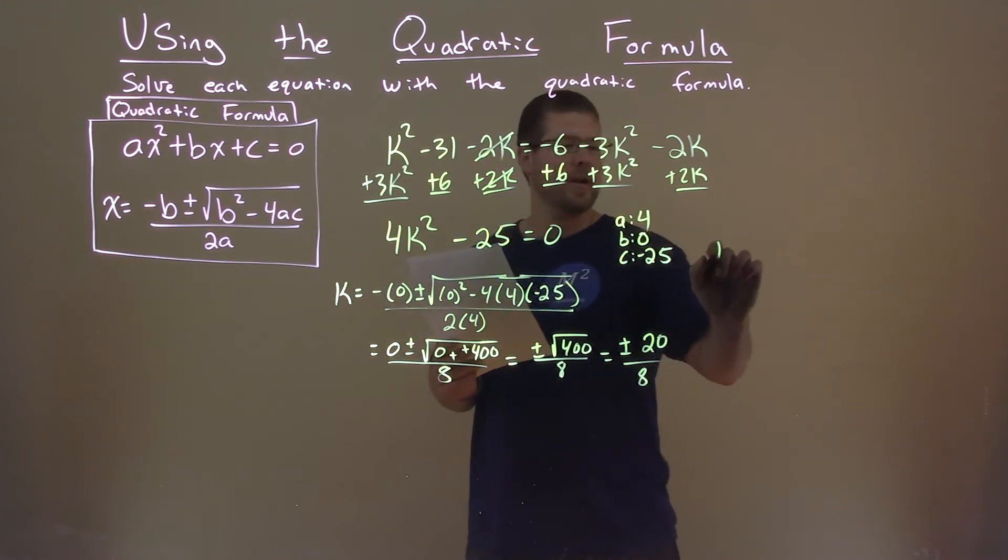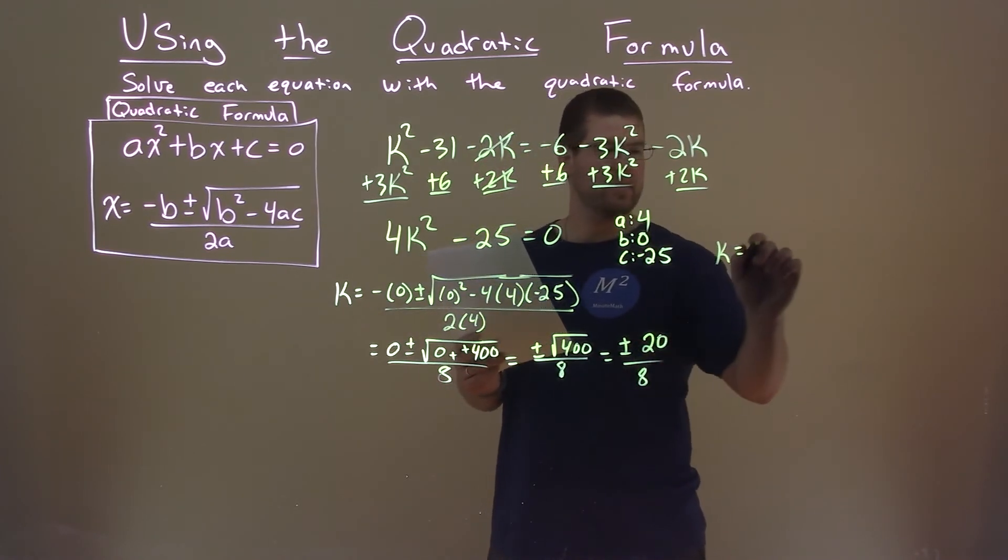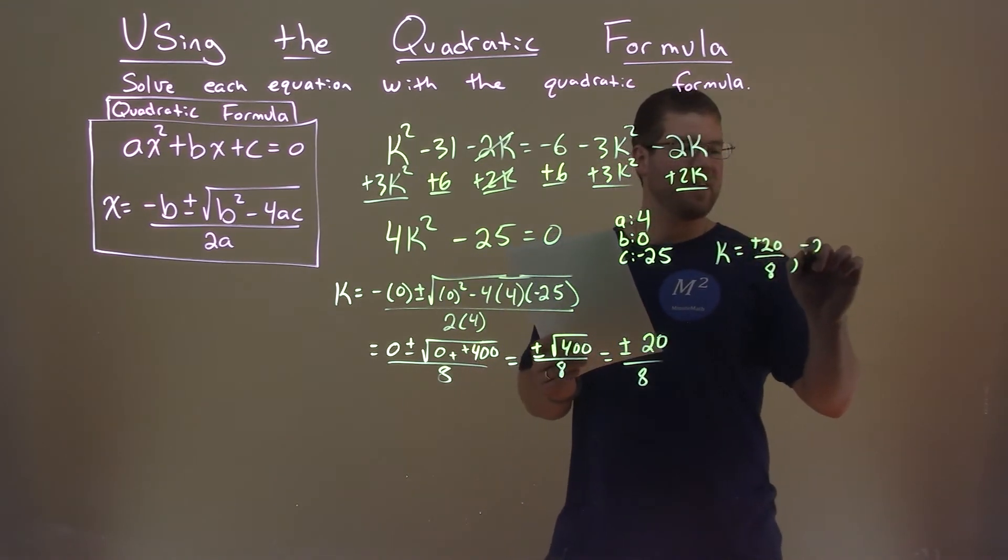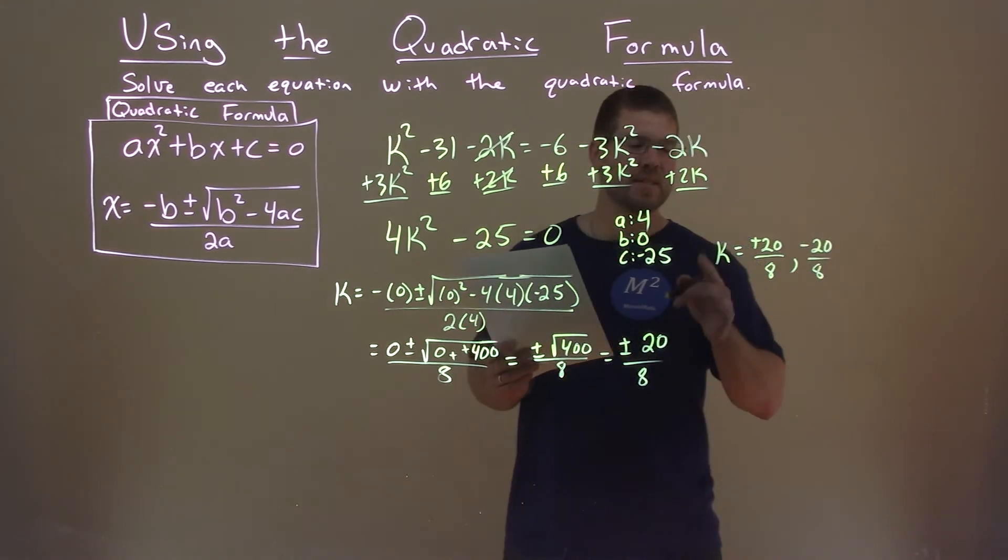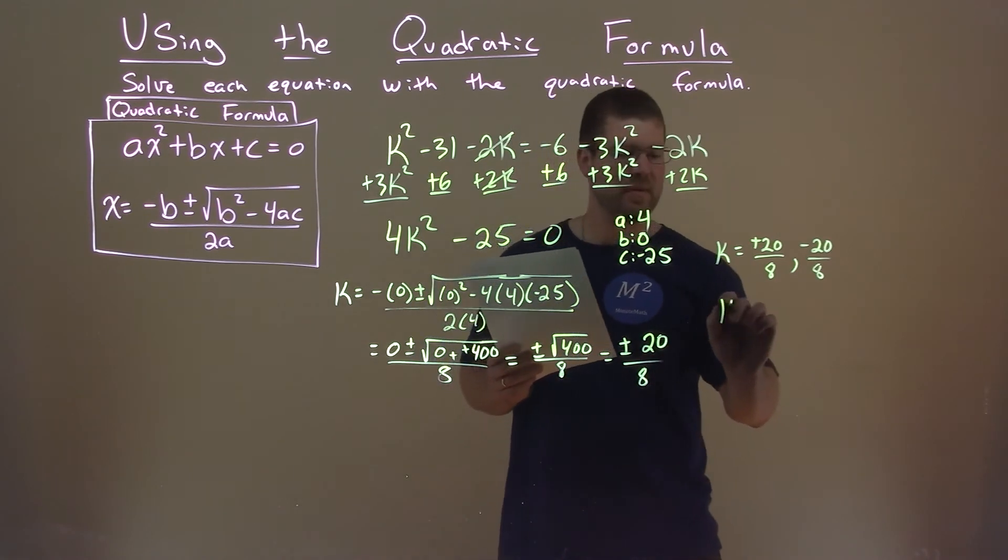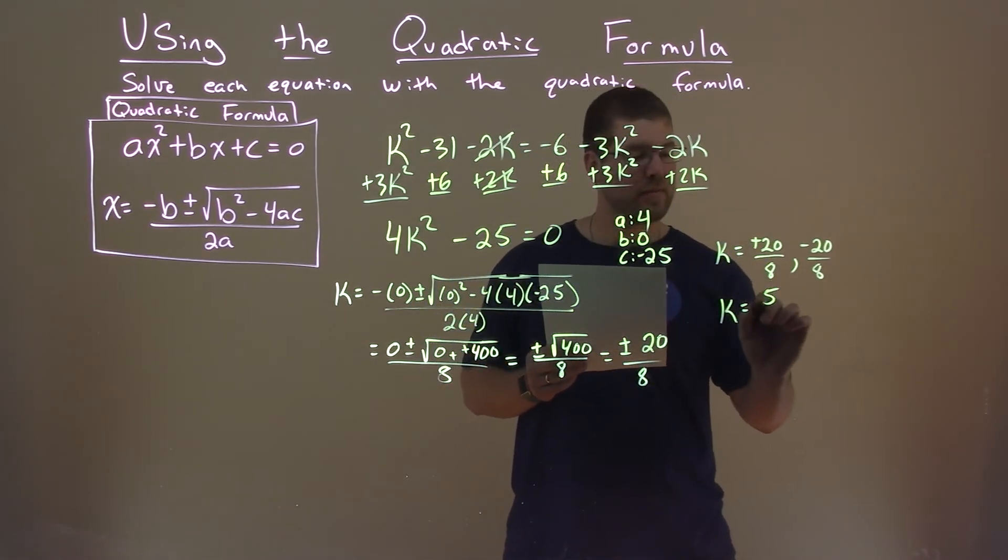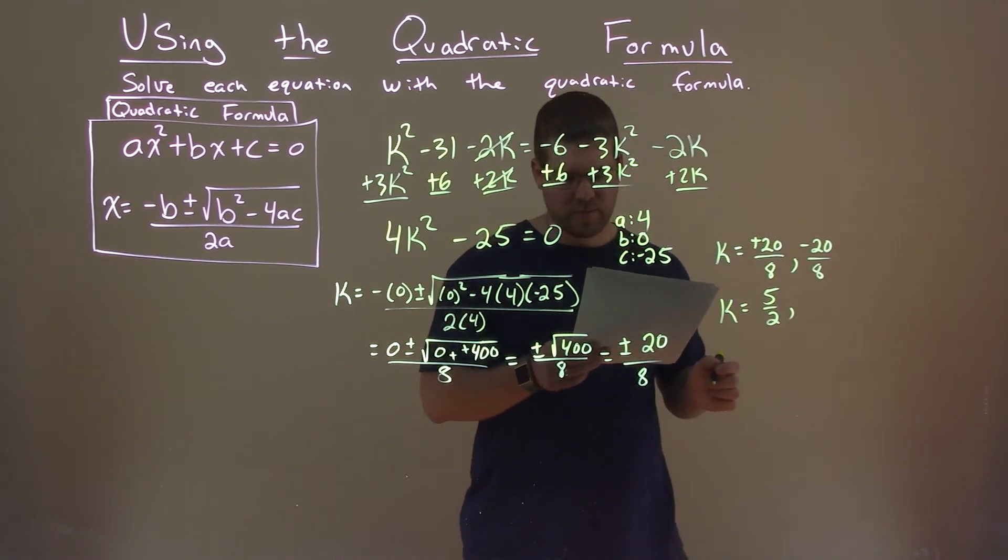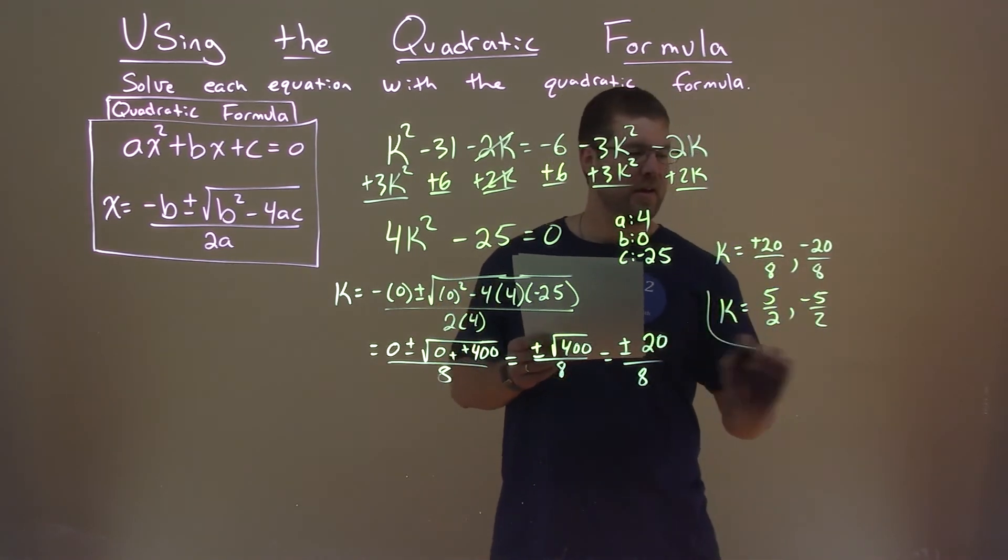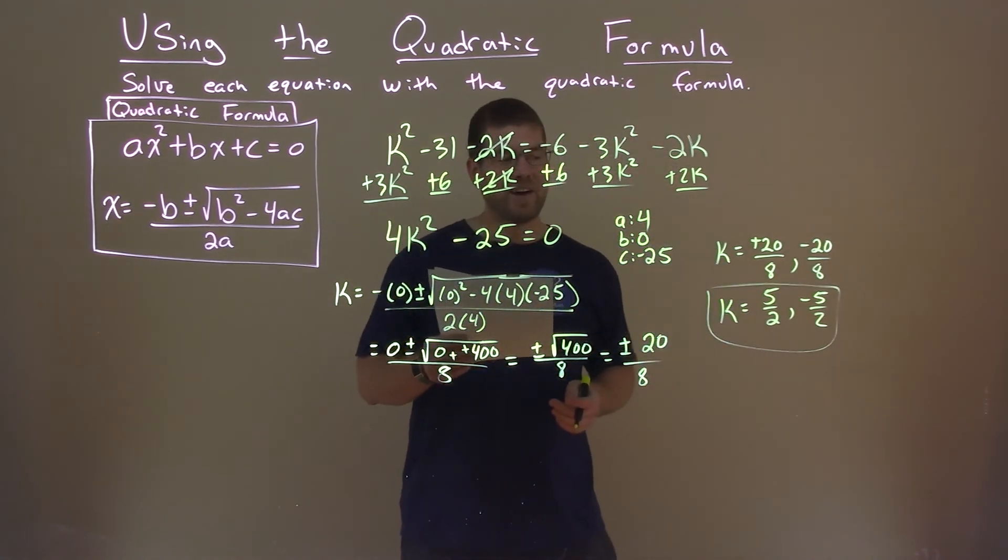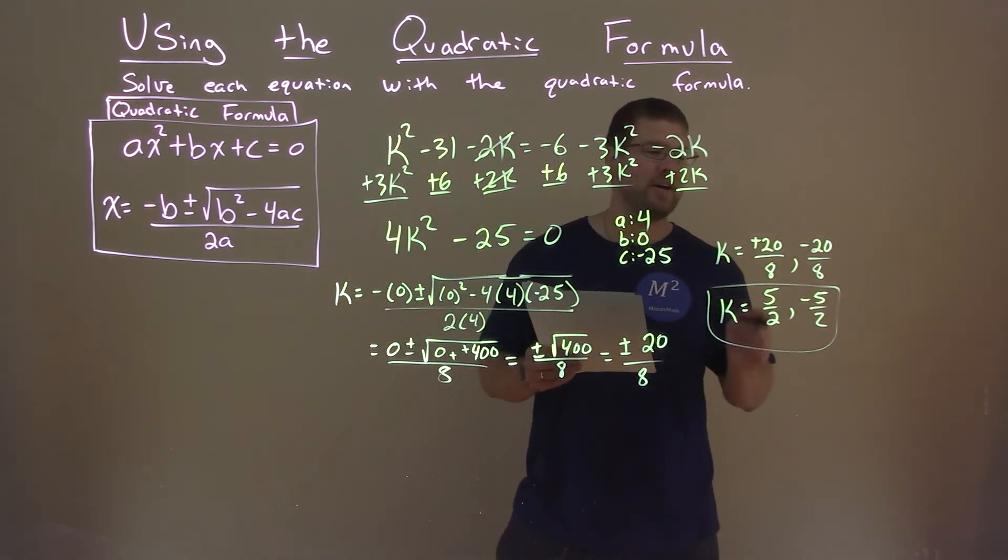So now let's break it up into two parts. Plus 20 over 8, and then minus 20 over 8. And we're going to simplify both parts now. So 20 divided by 8 simplified is 5 halves, and negative 20 divided by 8 is negative 5 halves. And so here we have our final answer. K is equal to 5 halves and negative 5 halves.